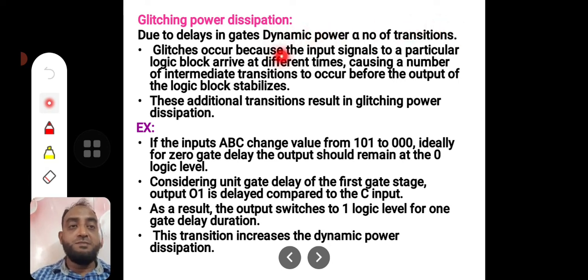Glitches occur because the input signals to a particular logic block arrive at different times, causing a number of intermediate transitions to occur before the output of the logic block stabilizes. Some inputs are coming directly from the preceding stage, and some inputs are coming through logic gates which have their own propagation delay times.